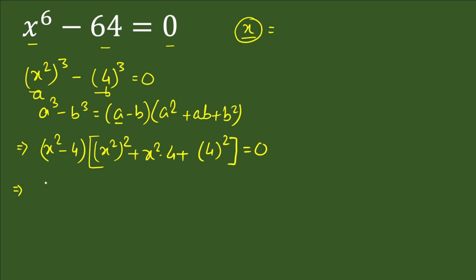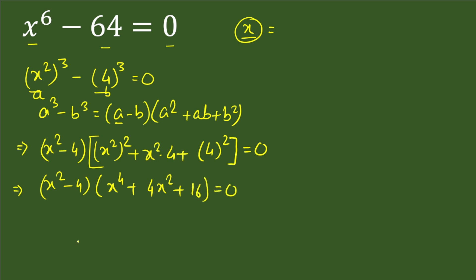Simplifying, (x²)² gives x⁴, and ab gives 4x². So the expression becomes (x² minus 4)(x⁴ plus 4x² plus 16) equals 0.